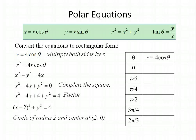Let's plug some points into the polar form. At theta equals 0, cosine of 0 is 1, so r equals 4. At pi over 6, r equals 2 square root of 3. At pi over 4, cosine is square root of 2 over 2, giving r equals 2 square root of 2. At pi over 2, cosine is 0, so r equals 0. At 3 pi over 4, we get negative 2 square root of 2. At 2 pi over 3, we get 4 times negative 1 half, which is negative 2.